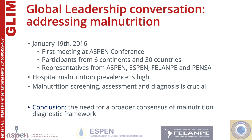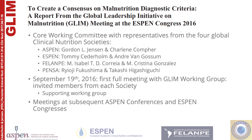In 2016, the GLIM group was developed, representing six continents and over 30 countries. This group agreed to work together to develop a diagnostic framework that could be tailored to individual nations and regional preferences for screening and assessment, but that a common diagnostic language could be used to translate prevalence for worldwide comparison and benchmarking. A core committee was developed, including representatives from four clinical nutrition societies.